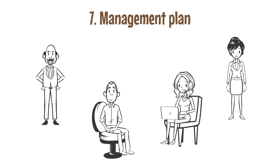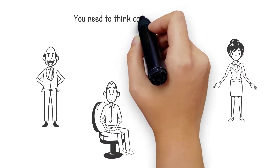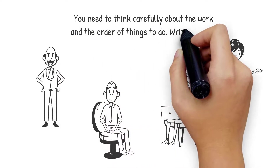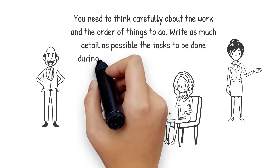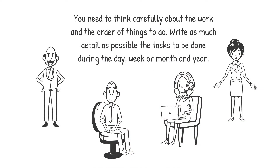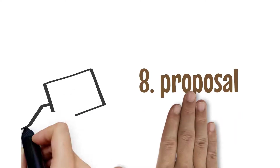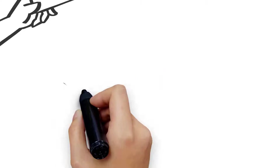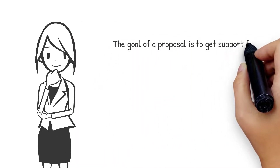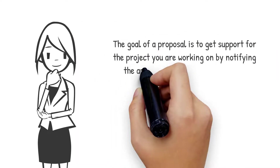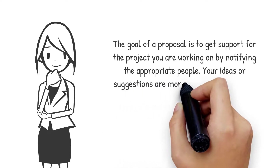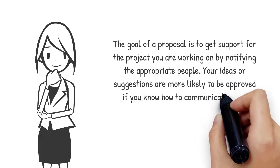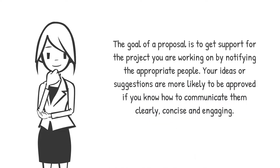7. Management Plan. You need to think carefully about the work and the order of things to do. Write in as much detail as possible the tasks to be done during the day, week, month, and year. 8. Proposal. The goal of a proposal is to get support for the project you are working on by notifying the appropriate people. Your ideas or suggestions are more likely to be approved if you know how to communicate them clearly, concisely, and engagingly.